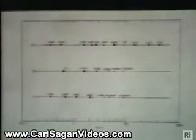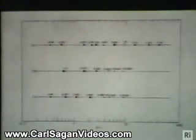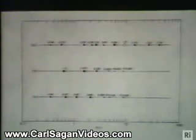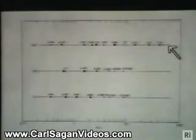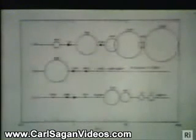Now, if the gas and dust cloud is very thin — there's not much matter around it — then we don't form big planets. We form something like a string of asteroids all the way out.